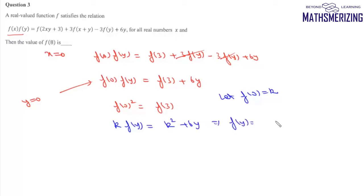To find f(8), we need to find k. In the functional relation, putting y = 0 gives us f(x)·f(0) = f(3) + 3f(x) - 3f(0).